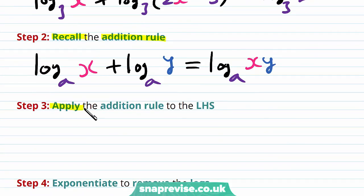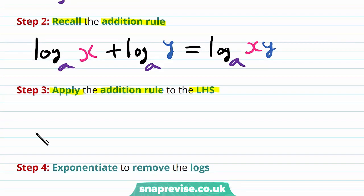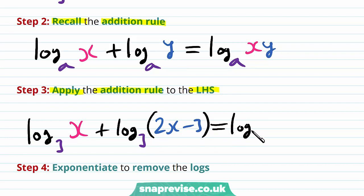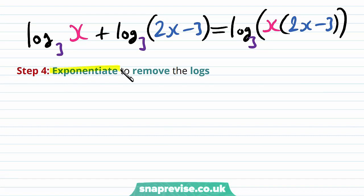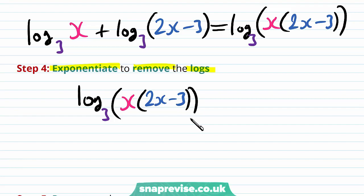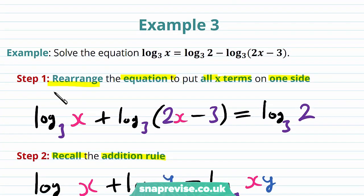Our third step is to apply the addition rule to the left hand side. We have the log base 3 of x plus the log base 3 of 2x minus 3. Therefore, this is going to be equal to the log base 3 of x multiplied by 2x minus 3, all inside the logarithm. Our fourth step is to exponentiate to remove the logs. Our new equation has log base 3 of x multiplied by 2x minus 3 as the left hand side, and the right hand side is going to be the log base 3 of 2.